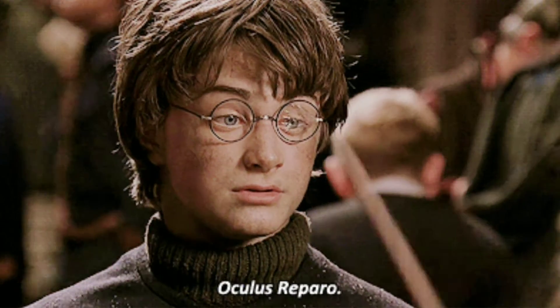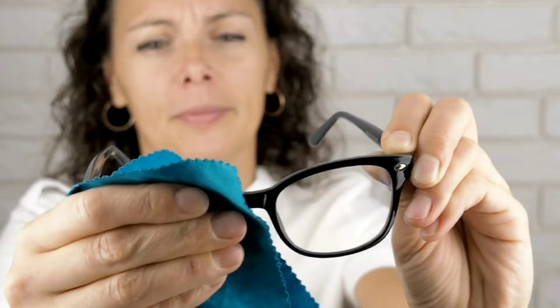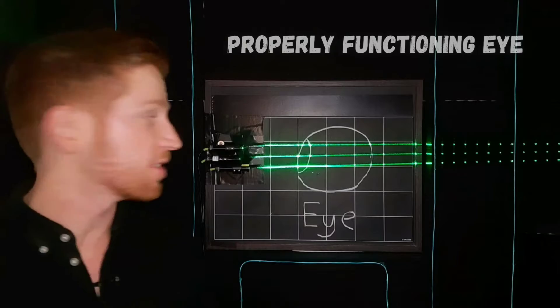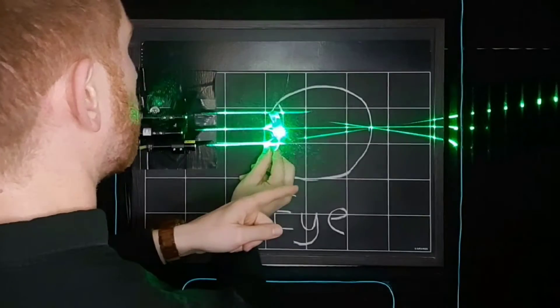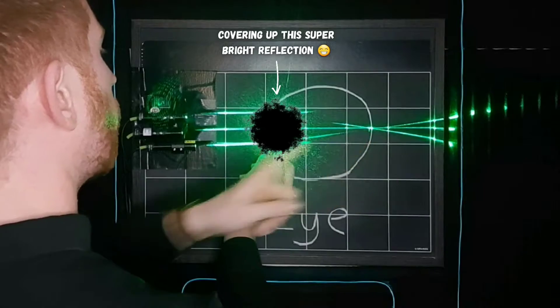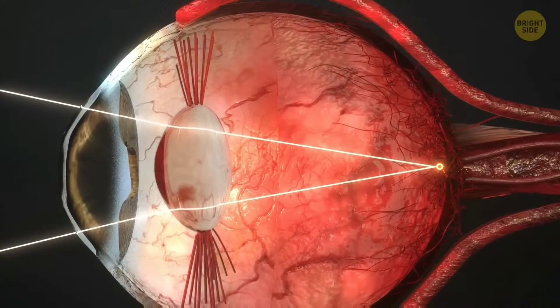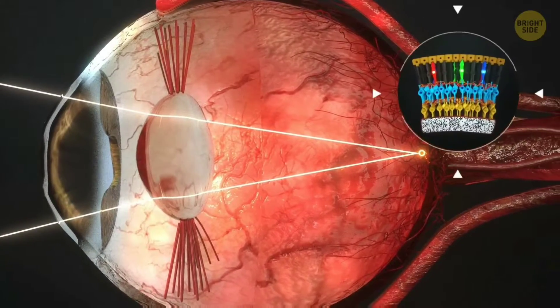All glasses and contacts correct your vision by shifting the light in your eyes to focus on your retinas properly. So if your eye is working the way it's supposed to, it looks at something far away, takes in that light, and focuses that down onto a single point on your retina. That's the back surface of your eye that has all of your light detecting cells.